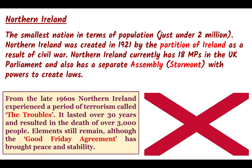Northern Ireland is the smallest nation in terms of population, with just under 2 million citizens. It's perhaps a tricky nation state to discuss. It was created in 1921 by the partition of Ireland — basically Ireland being split into two as a result of a civil war. Northern Ireland currently has 18 MPs in the UK Parliament and also has a separate assembly, sometimes referred to as Stormont, which has the powers to create laws.